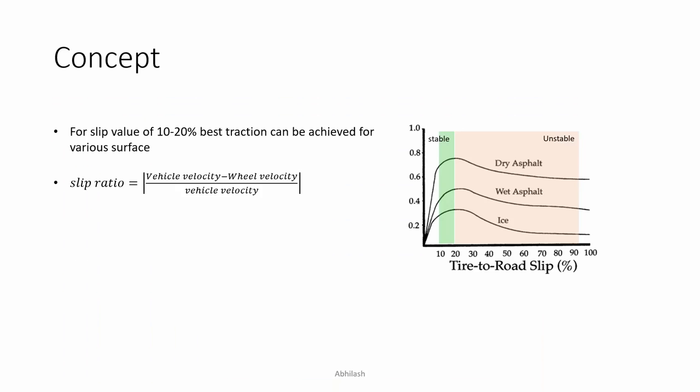To develop this system we need to understand the slip ratio curve shown on the right. There is a parameter called tire-to-road slip ratio, defined by the equation on the left — wheel velocity is generally higher than vehicle velocity for a driven wheel. When this slip ratio is somewhere between 10 to 20%, the vehicle is in a stable region and also has the best acceleration, because the friction ratio on the y-axis is highest in that region. Beyond that limit things get into an unstable region, which is dangerous and must be avoided.